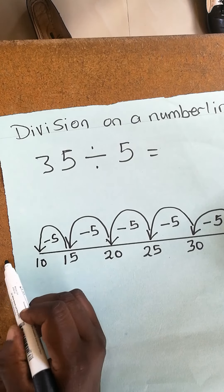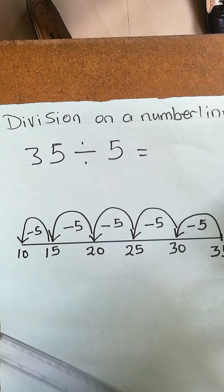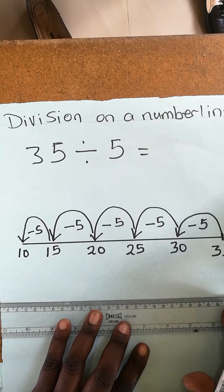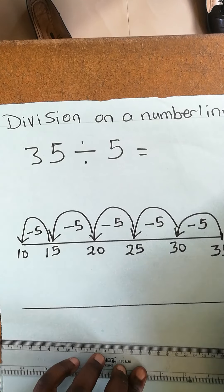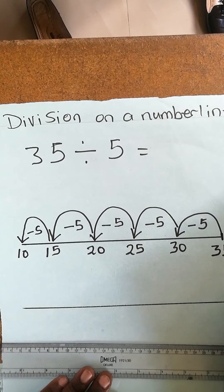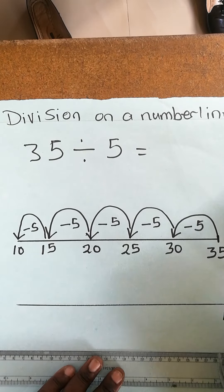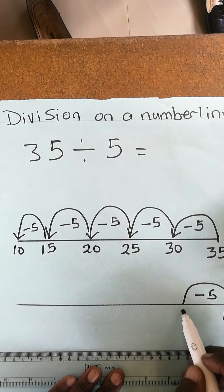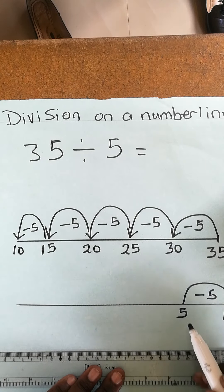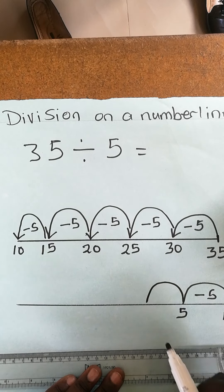Don't worry about the space. You are going to draw another line. Starting point is 10 where you have stopped. So you make another jump from there. Take away 5, it is going to be 5. Oh, last jump!